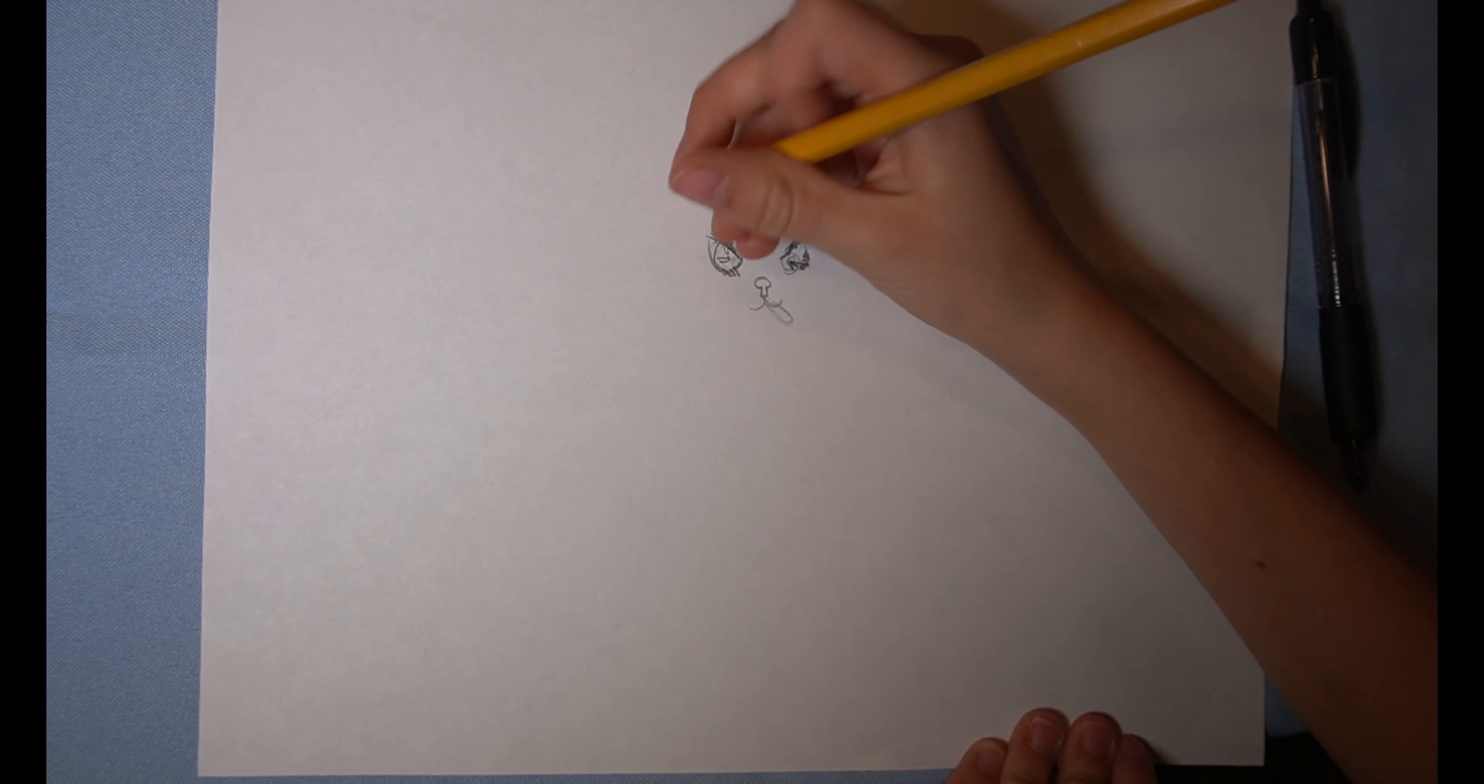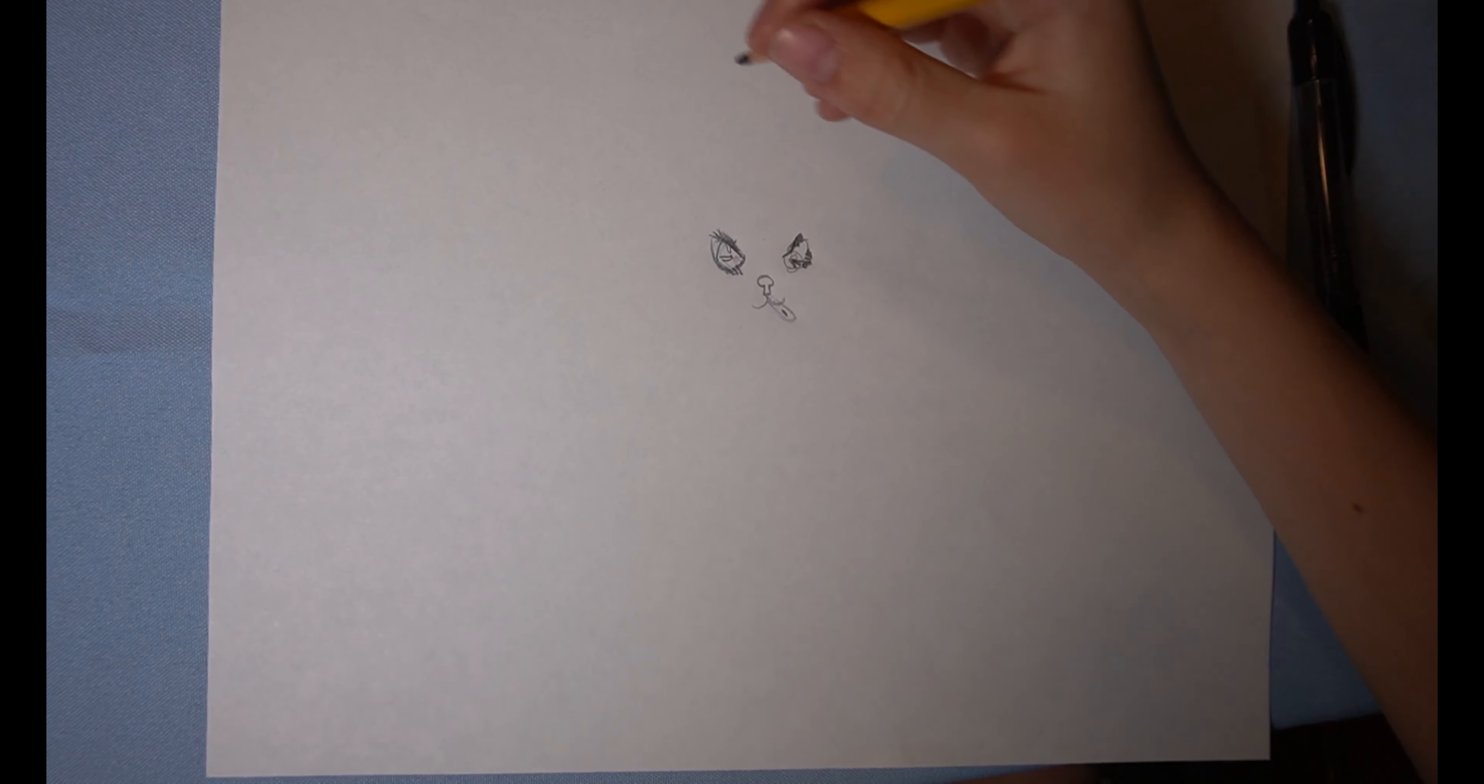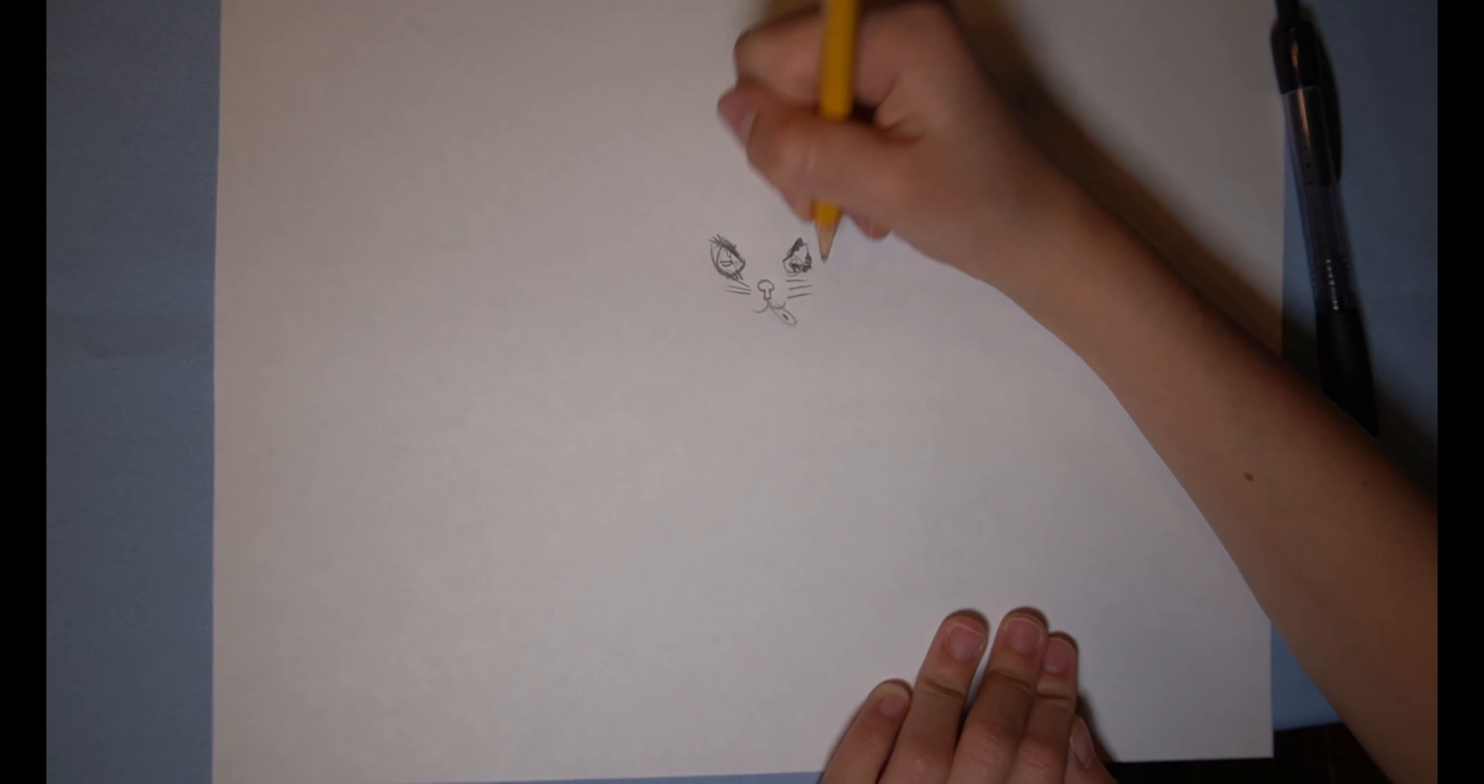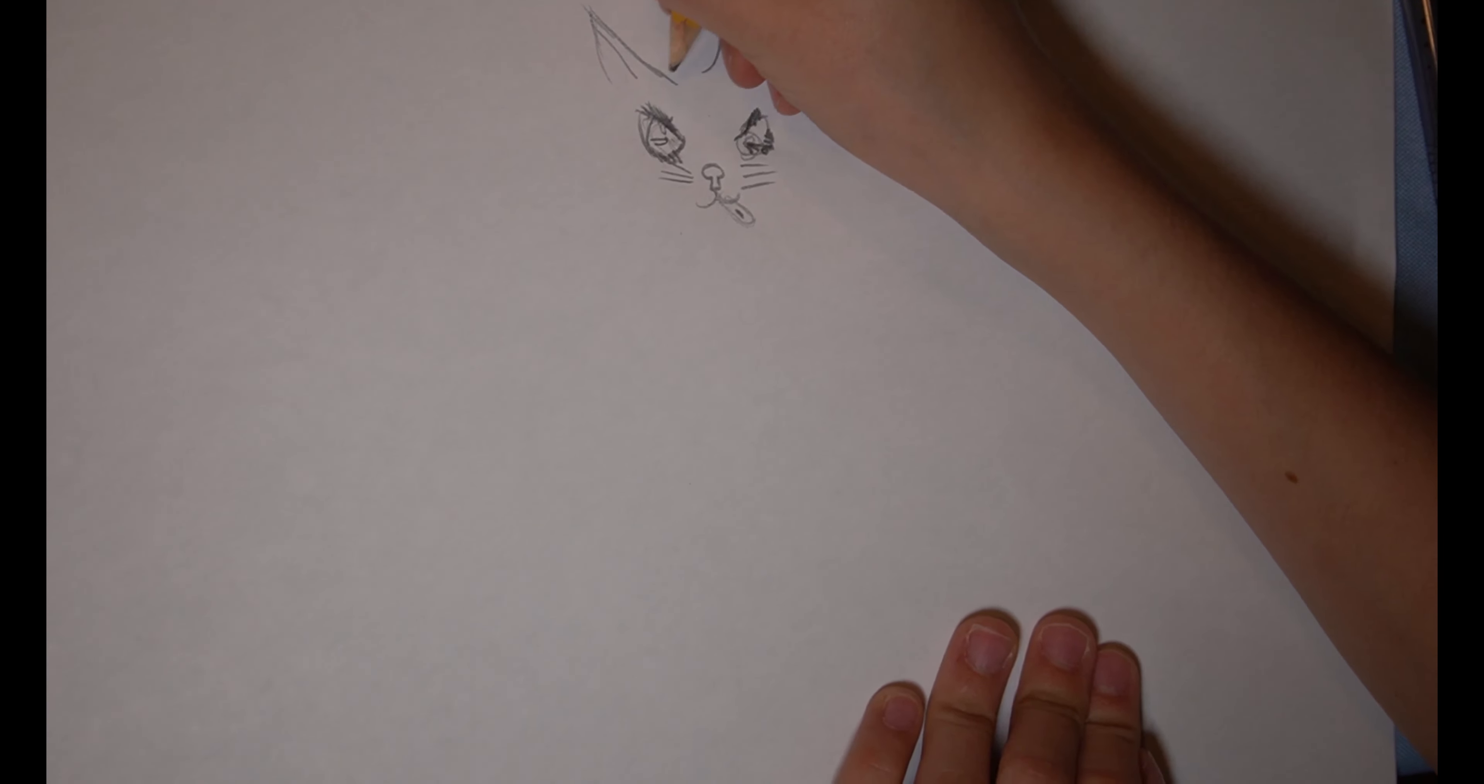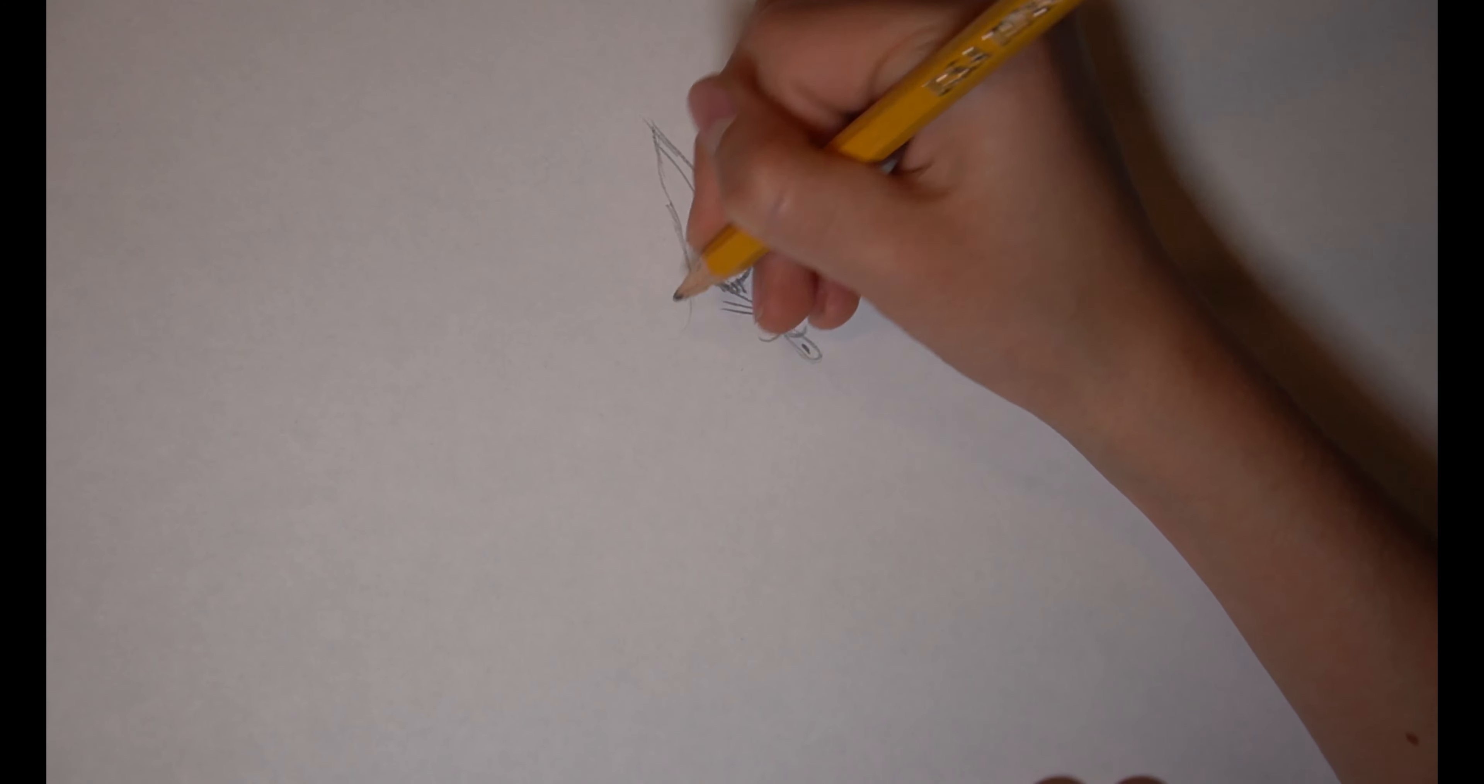And some whiskers like right here. And the ears, so after this we'll do coloring and darkening it with the pencil.